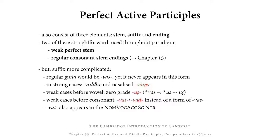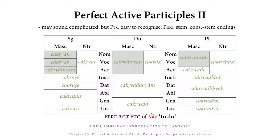Finally, in the weak cases of the participle, before case endings that begin with a consonant, the suffix appears either as WAT or as WAD, depending on whether the consonant that follows is voiceless or voiced, instead of appearing as a form of WAS. This WAT also appears in the nominative, vocative, and accusative singular in the neuter. This may all sound complicated, but the participle is rather easy to recognize because we have the perfect stem with its reduplication and consonant stem endings.